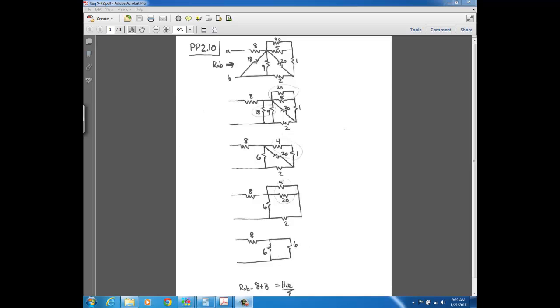And then the two 6's in parallel gives you 3. And then that parallel combination is in series with this 8. Because then it just becomes this last step here, that's just a basic series parallel circuit like we talked about at the very beginning of this topic. So 8 plus 3, that's the final answer of 11 ohms.